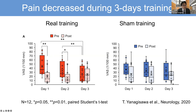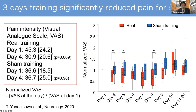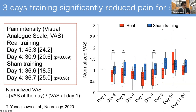As the main outcome, after three-day training, pain was significantly reduced: before training the pain was about 45.3 mm on VAS, significantly reduced to 30.9 mm on average. In sham training there was no significant difference before and after training. There was a significant difference between the two trainings for five days after training, so this three-day BCI training significantly reduced pain for five days.